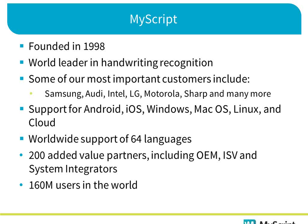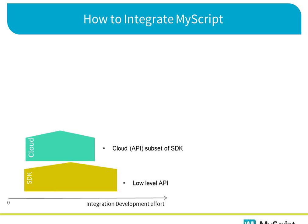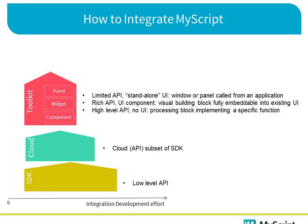Let's talk a bit about the technology itself — how do you integrate MyScript into your applications? I've represented different offerings along a horizontal axis of integration development effort. At the very lowest level, we have our SDK. A little bit above, with less integration development effort, we have our cloud offer, which is a subset of the SDK, and that's what we're going to focus on today. Higher up, we have what we call the application toolkit, which is built with a panel that has UI widgets and components. And then, of course, all this allows you to build applications. We do have a couple of MyScript apps — the idea is really to provide showcase applications so that users understand the power of handwriting.